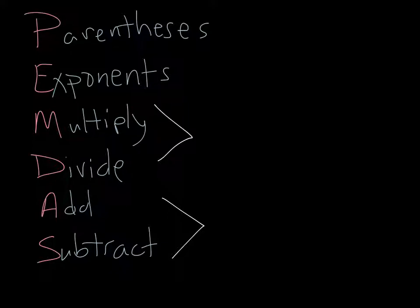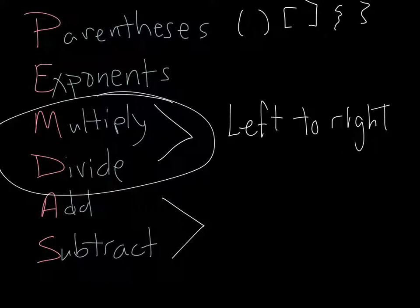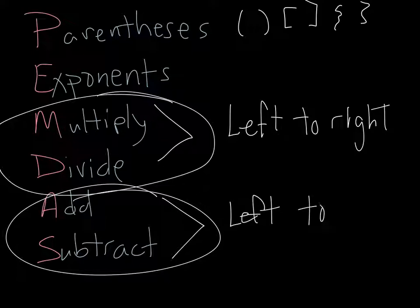And those letters stand for parentheses or other grouping symbols, things that group parts of the expression together. So they could be round parentheses like that, or square brackets, or squiggly brackets, or anything that groups our mathematical statements together. Then we have exponents. Those get done next. And then, even though it says M, then D, multiply, divide, we actually do those two operations together. And we do them from left to right. And same with addition and subtraction. We do addition and subtraction in order as they show up in the problem, from left to right.